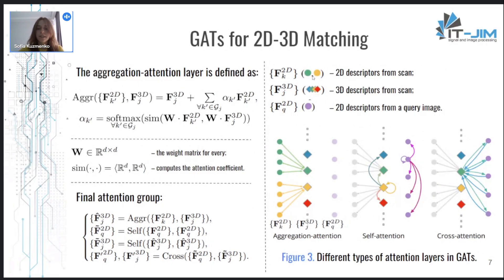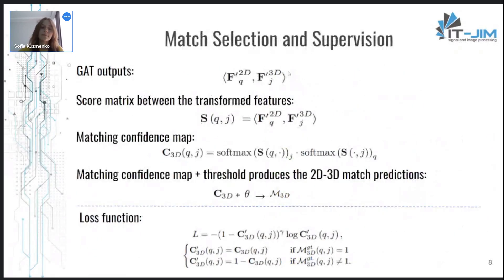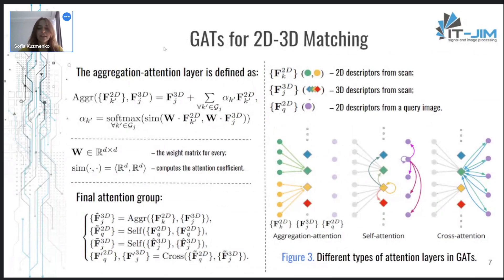Firstly, these 3D key points are described by applying an aggregation operation over multiple two-dimensional features associated with a single 3D point. And instead of simple averaging, authors propose to adaptively preserve the most informative two-dimensional features. And that is done by using the aggregation attention layer described with the formula here. And further authors decided to add self and cross attention layers following the aggregation attention layer. That is a final attention group.